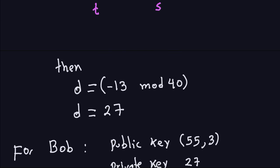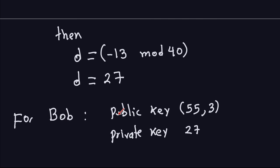So Bob's public key is (55, 3) — N = 55 and E = 3 — and the private key is D = 27. Bob is now ready to receive encrypted communication. He makes (55, 3) public so anyone can send encrypted messages, but only he can decrypt them with his private key. In the next video we'll complete the example by encrypting x = 4 and verifying we get the original plaintext back after decryption.